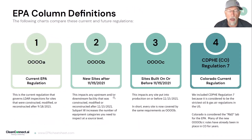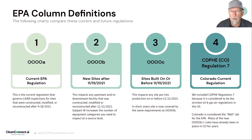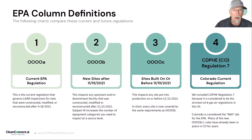The first part of the cheat sheet compares four columns: Quad O-A, Quad O-B (which is new sites after 11-15-2021), Quad O-C (which is sites built on or before November 15th, 2021), and the Colorado current regs. I included Colorado because it's generally considered one of the toughest areas of enforcement, and Colorado has really become the R&D lab for the EPA — a lot of what you're seeing now has already been implemented there for a while.